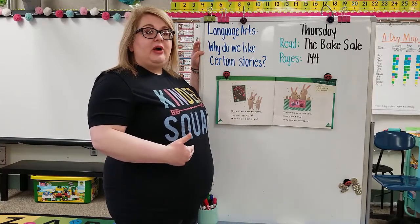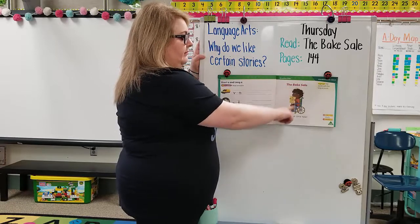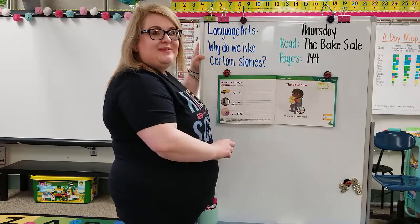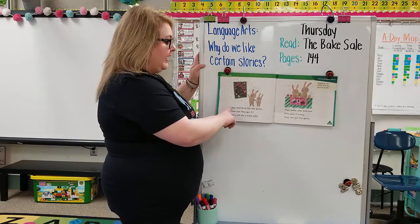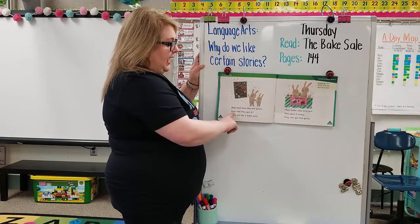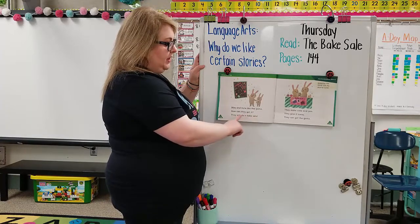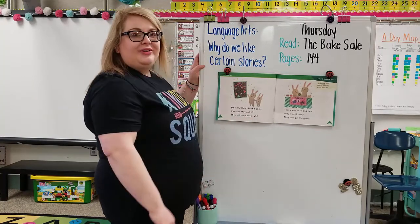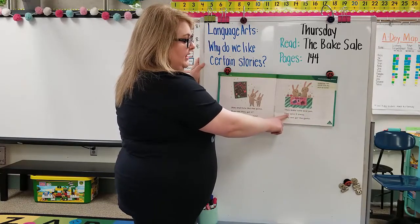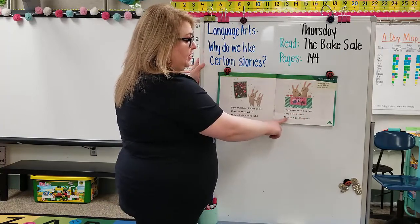Let's go back through the story again, and this time I will pause so that way you can read it after Miss Beery. Miss Beery's turn first: 'The Big Sale.' Your turn. Miss Beery's turn: 'It is a fun little tale!' Your turn. Great job. Next page — Miss Beery's turn: 'Max and Kate like the game.' Your turn. Miss Beery's turn: 'How can they get it?' Your turn. Miss Beery's turn: 'They will do a big sale.' Your turn. Wonderful. Last page — Miss Beery's turn: 'They make cake and jam.' Your turn. Miss Beery's turn: 'They give it away.' Your turn. Wonderful. Last line: 'They can get the game.' Your turn.